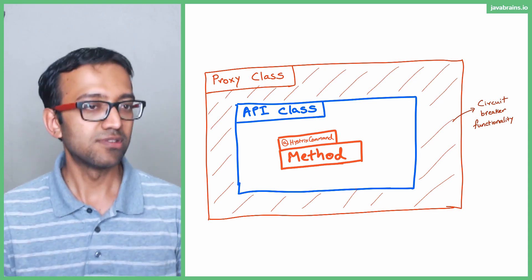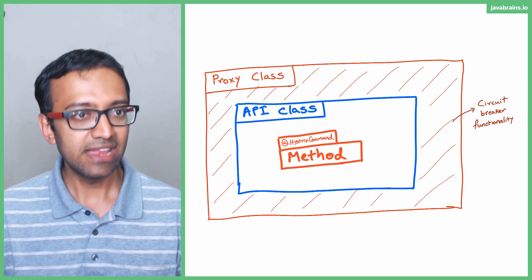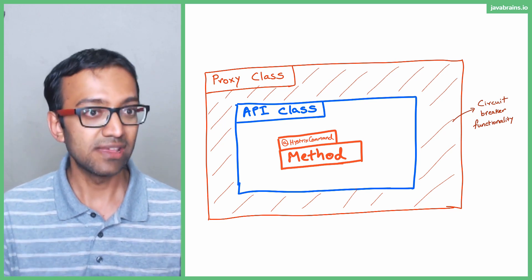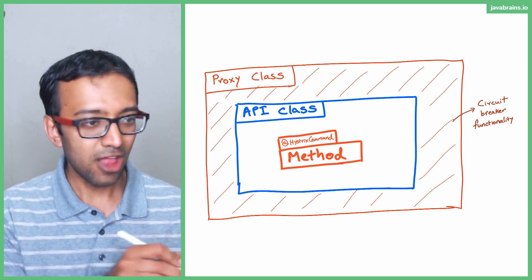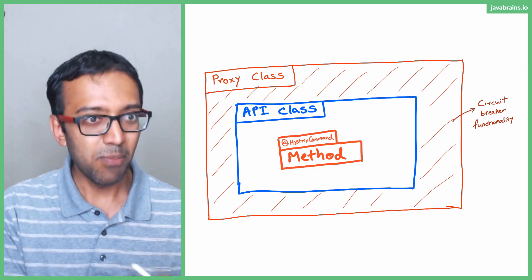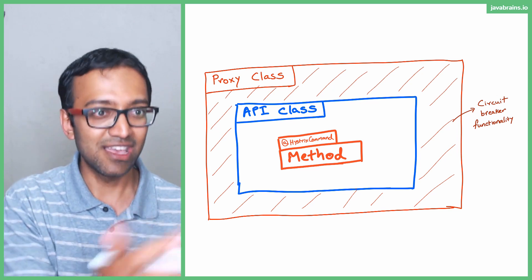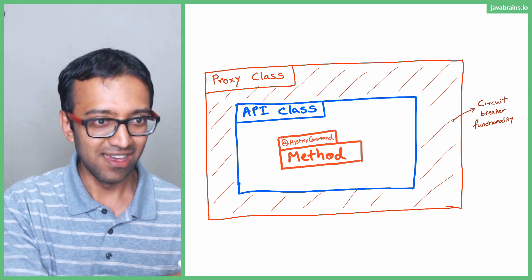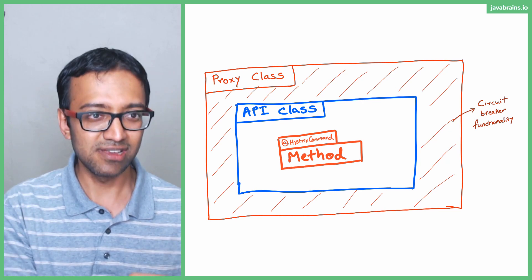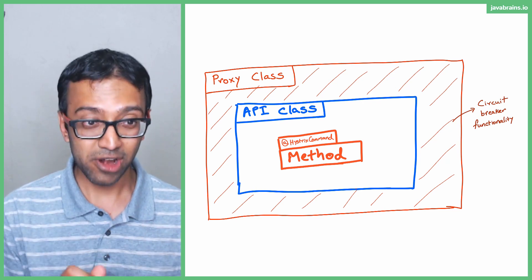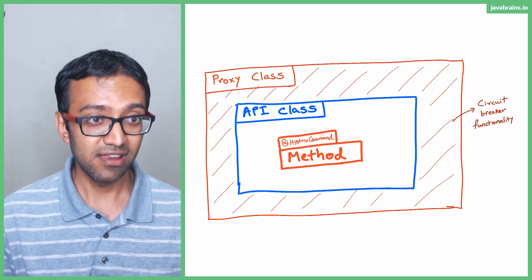The only way to solve this problem is by taking that method out into another class — another Spring service or Spring bean. Have the main API method call not another method of the same class, but a method of another instance. Once that happens and you auto-wire that instance, guess what instance it gets? It gets the Hystrix proxy, and everything works. Since it's another instance, the Hystrix proxy intercepts the call and performs the fallback. Very important to remember: if it's methods within the same class, Hystrix is not going to work.